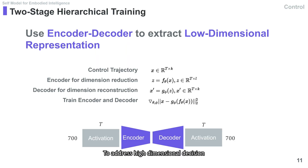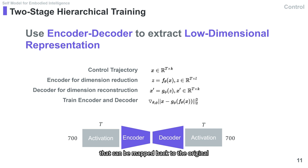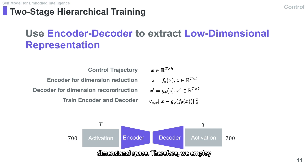To address high-dimensional decision-making problems, we aim to find an effective low-dimensional representation that can be mapped back to the original high-dimensional space, enabling the agent to make decisions within a lower-dimensional space.